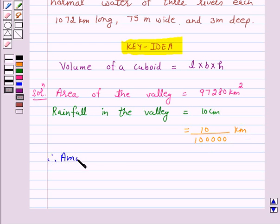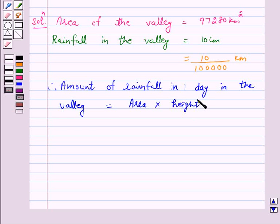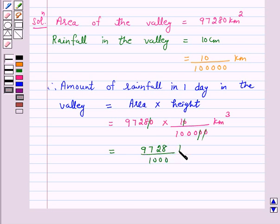Therefore, the amount of rainfall volume in one day in the valley equals area multiplied by height, which is 97,280 into 10 upon 1,00,000 km³, and this equals 9,728 upon 1,000 km³, which is equal to 9.728 km³.